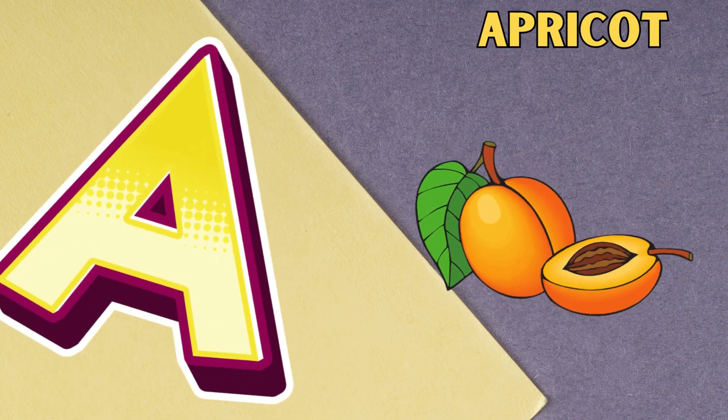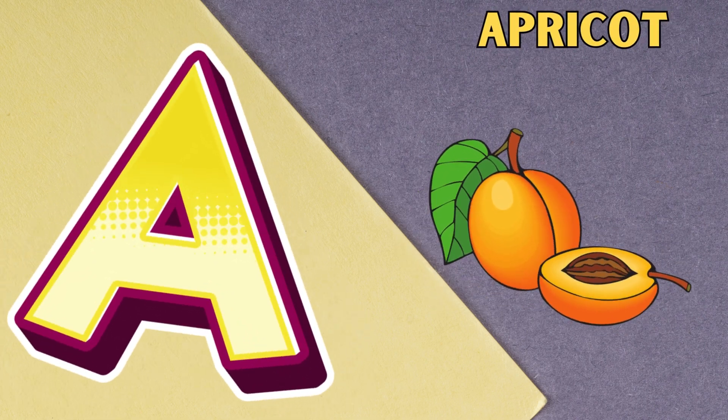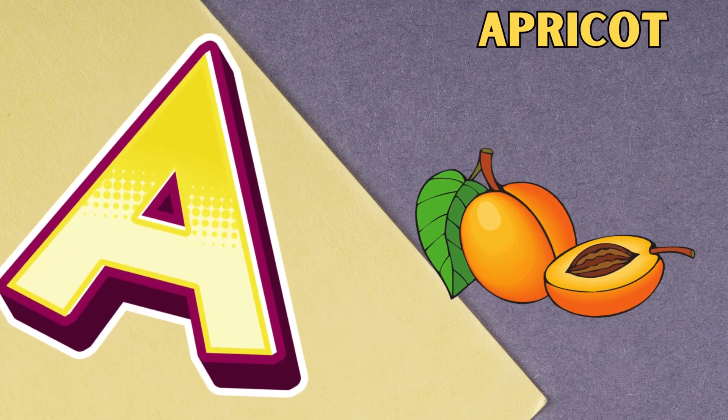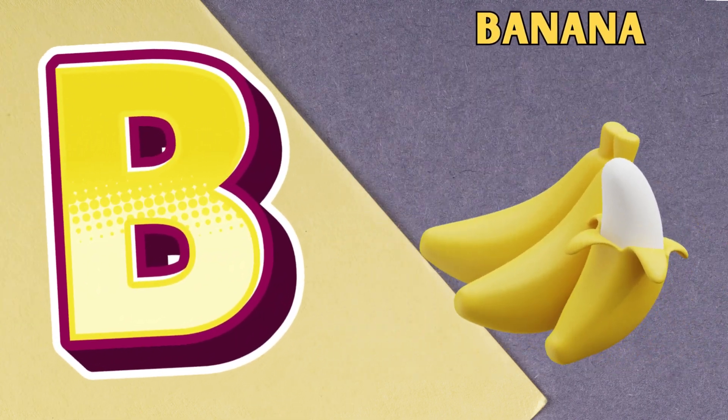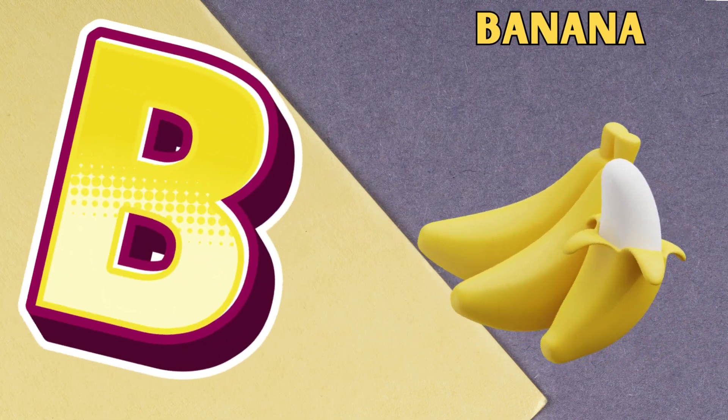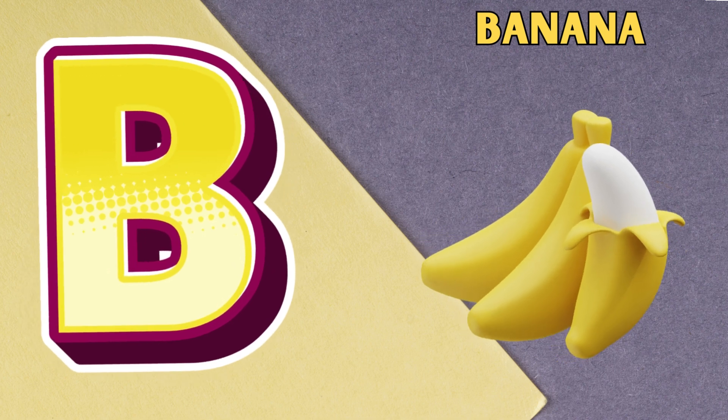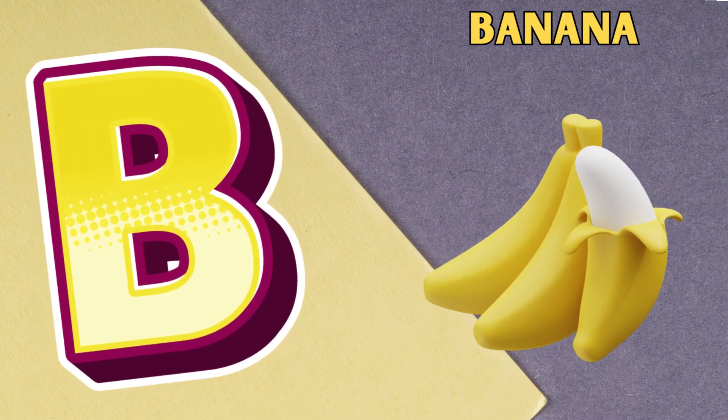A is for apricot, apricot. B is for banana, banana.